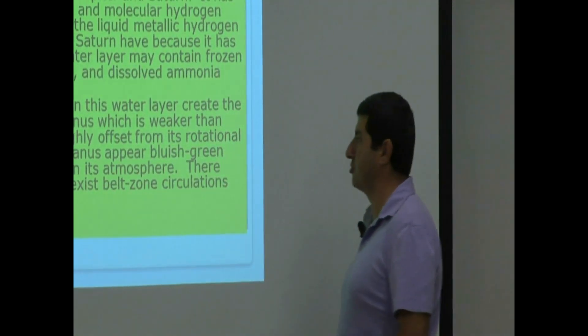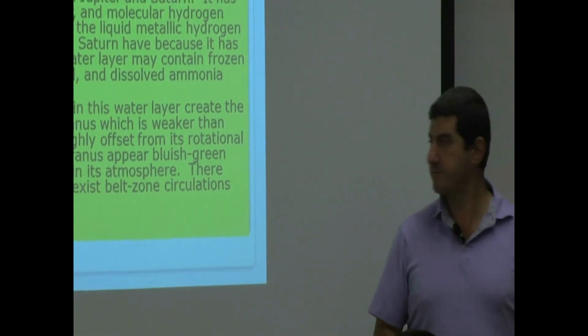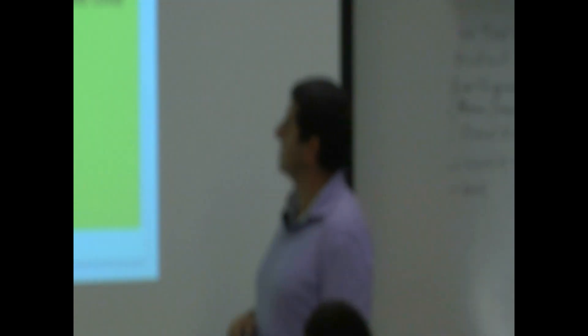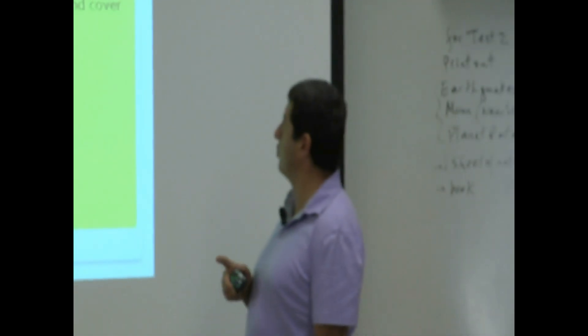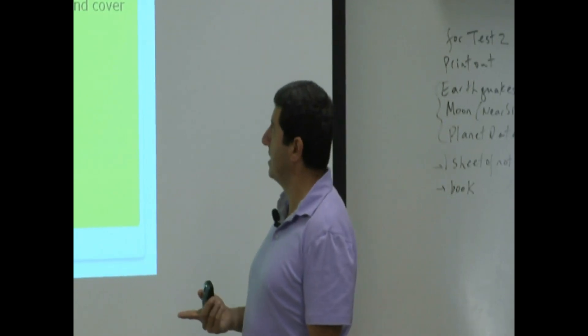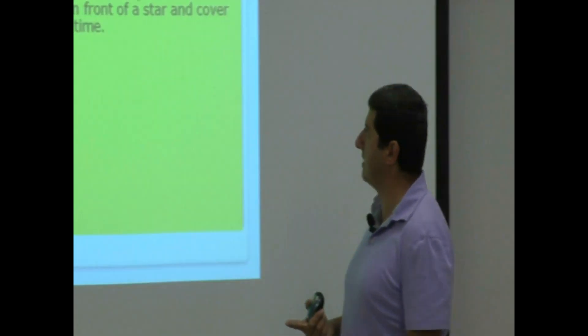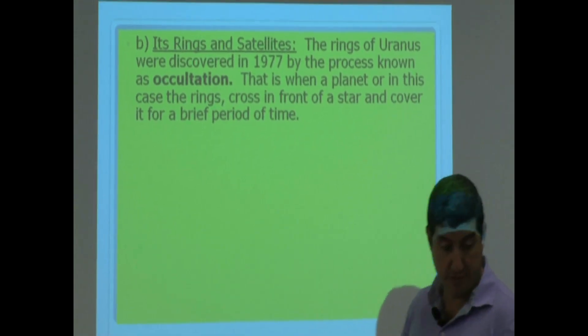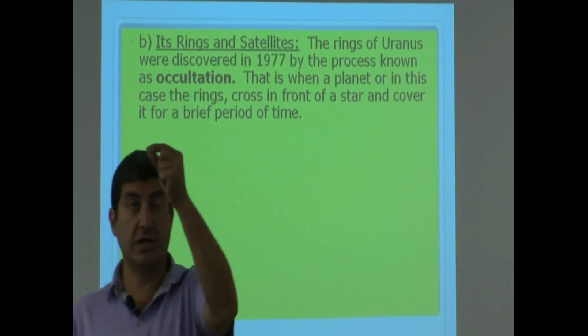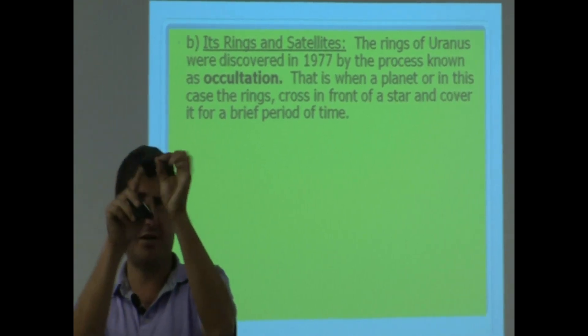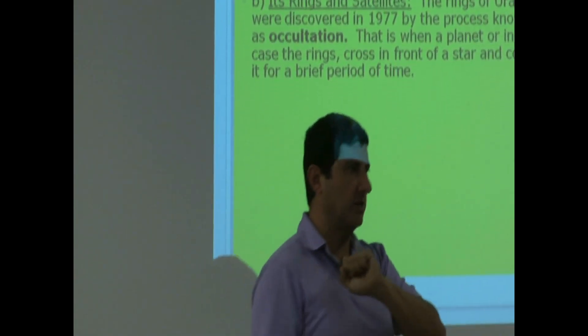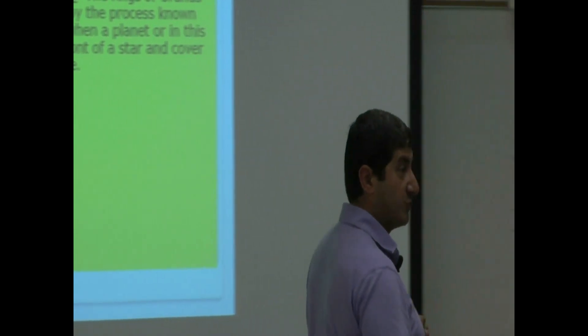There does not appear to exist belt-zone circulations on Uranus. Its rings and satellites: the rings of Uranus were discovered in 1977 by the process known as occultation. That is when a planet, or in this case the rings, cross in front of a star and cover it for a brief period of time. When the ring comes between us and the star, they cover the light of that star, and then we can see that the planet has rings.